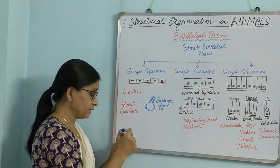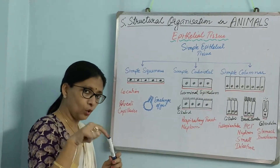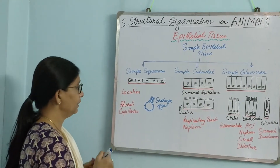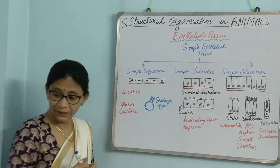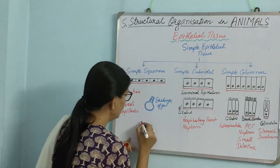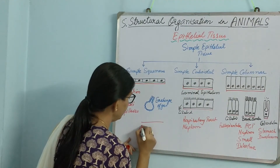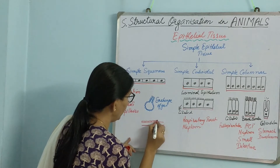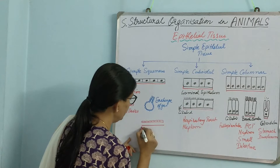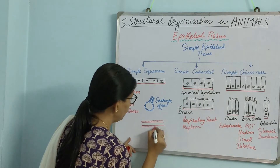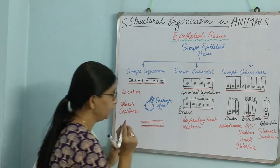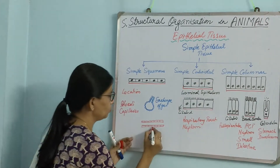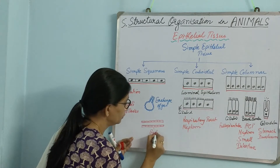Capillary walls are made up of just one row of cells, and that is simple squamous epithelium. Capillary walls are also very thin, made of just one layer of simple squamous epithelial cells. In the case of capillaries, the epithelial tissue is known as endothelium.